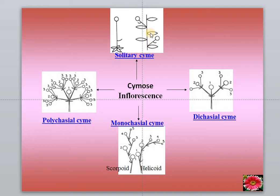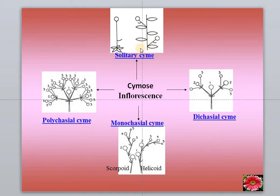This is a growing branch with the inflorescence in the middle. From each axil, only one flower is formed. So whether it is a terminal single flower or it is an axial single flower, that is solitary, provided it should have a branch.